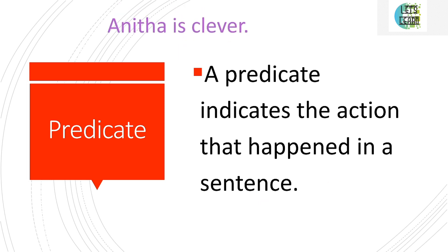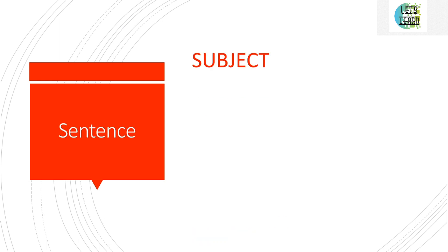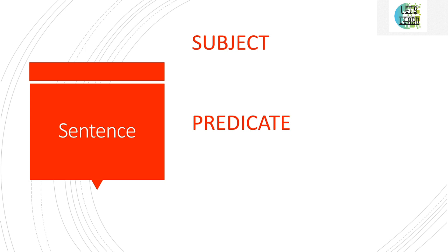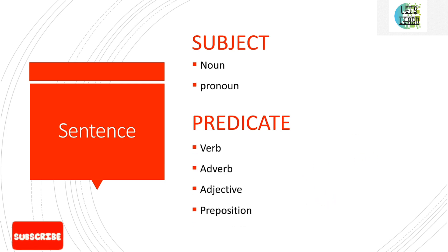For example, in the sentence 'Anita is clever,' Anita is the subject and 'clever' is the predicate. We must clearly understand that in a sentence there are two parts: the subject and the predicate. The subject may be a noun or a pronoun.